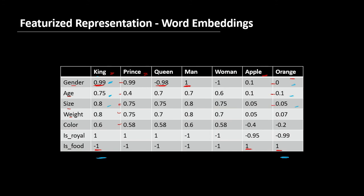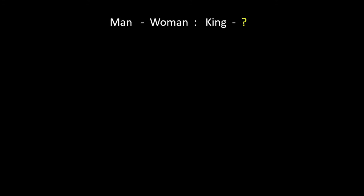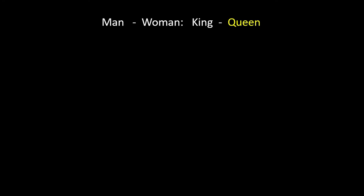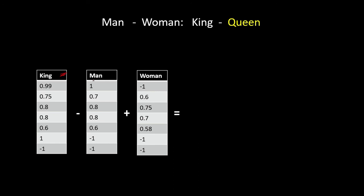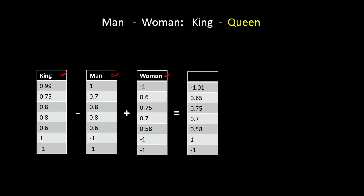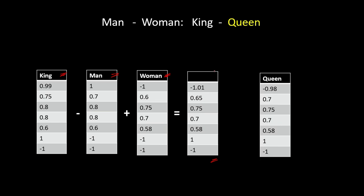Another cool thing we can do is find analogies. For example, if we tell the model that 'man' is to 'woman', then 'king' is to what? Then our model will tell that the answer is 'queen'. If you subtract the vector of 'king' with the vector of 'man' and add the vector of 'woman', then the resultant vector can be compared with all words in the vocabulary, and you will see that this vector is closely related to 'queen'. By comparing the similarity of this vector with all the words in the vocabulary, we can obtain the answer as 'queen'.